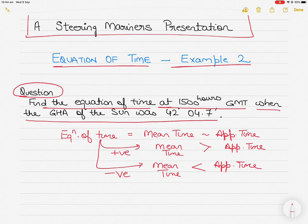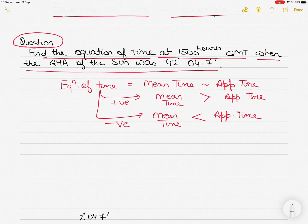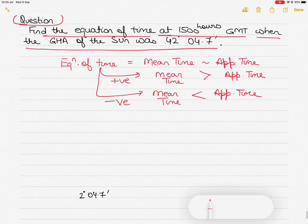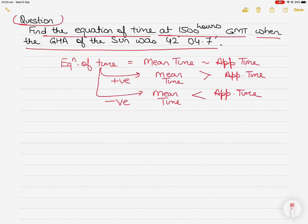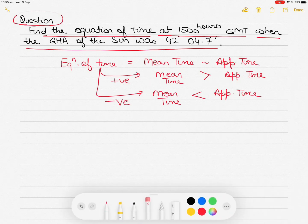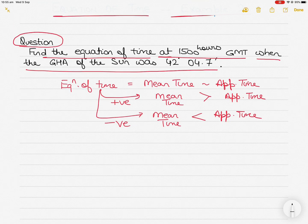But you never get a negative number — you call it positive or negative. Mean time is obtained from the movement of the mean sun, whereas apparent time is obtained from the movement of the true sun. The mean sun is a fictional sun which takes exactly 24 hours to rotate about its orbit, whereas the true sun is the real sun we see in the sky, which does not take exactly 24 hours every day.